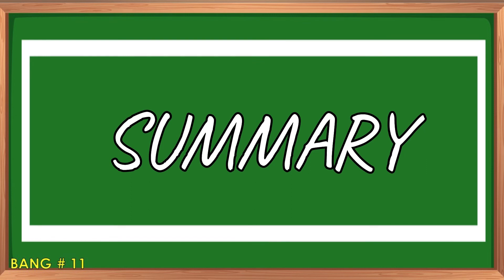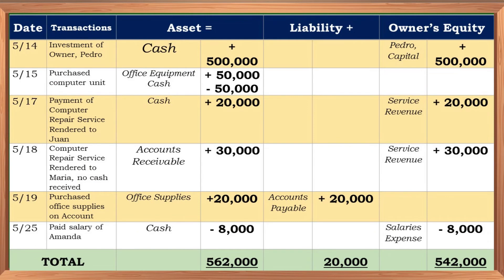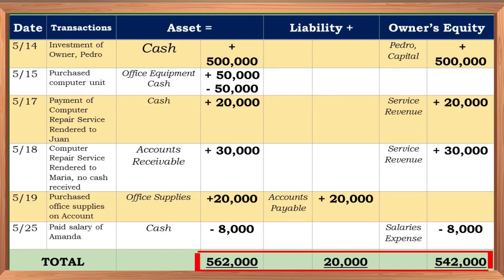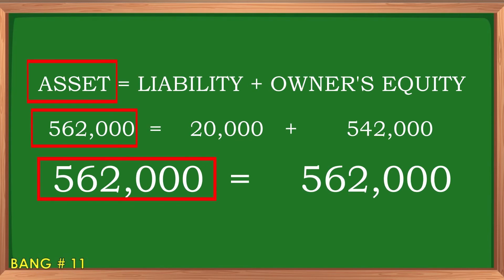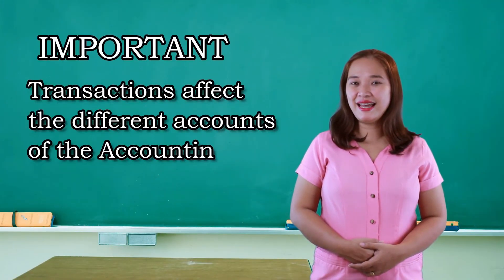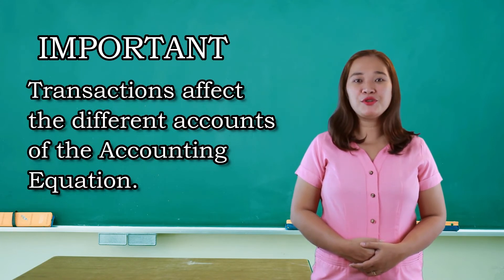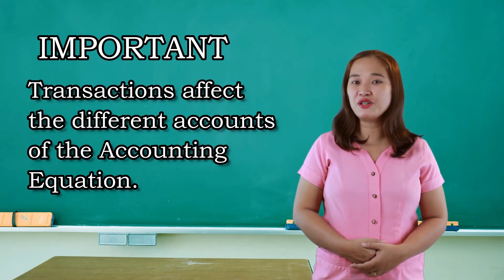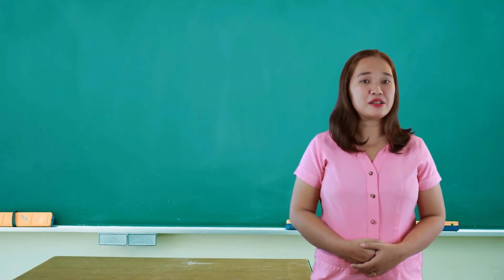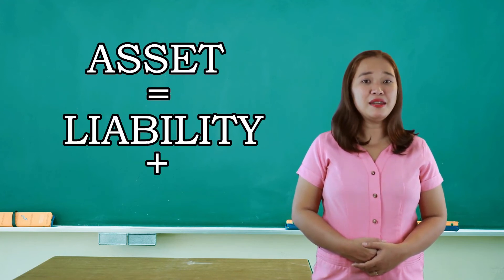This is now the summary of the transactions using the accounting equation. As you can see, the total amount of asset is equal to the sum of the amount of liability and owner's equity. In analyzing business transactions, we need to consider the effects to the different accounts using the accounting equation. Do not forget that total asset is always equal to the sum of liability and owner's equity.